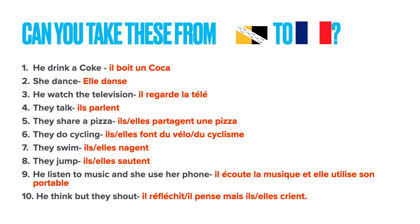Here are the answers. 'He drink a Coke' — 'il boit un coca'. 'She dance' — 'elle danse'. 'He watch the television' — 'il regarde la télé'. 'They talk' — 'ils parlent', or 'elles parlent'. 'They share a pizza' — 'il ou elle partage une pizza'. 'They do cycling' — 'ils/elles font du vélo ou font du cyclisme'. 'They swim' — 'il ou elle nage'. 'They jump' — 'il ou elle saute'. 'He listen to music and she use her phone' — 'il écoute la musique et elle utilise son portable'. 'He think, but they shout' — 'il réfléchit ou il pense, mais il ou elle crie'. Those were the possible answers taking it from Norfolk to French.